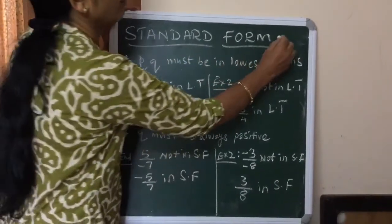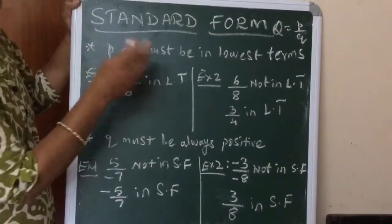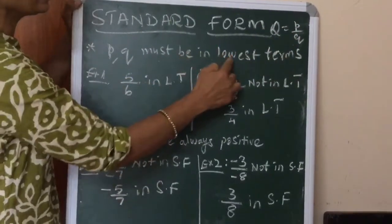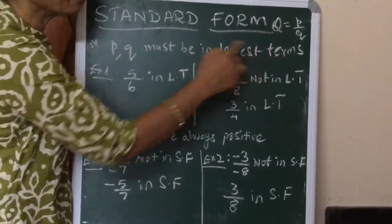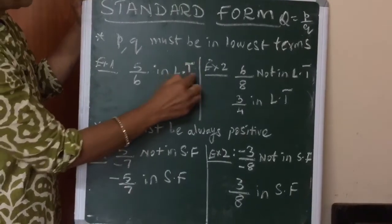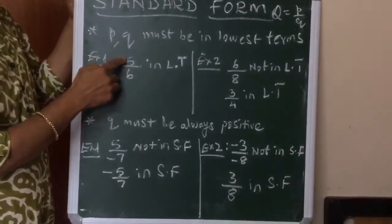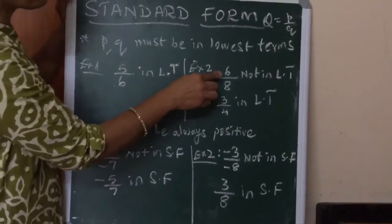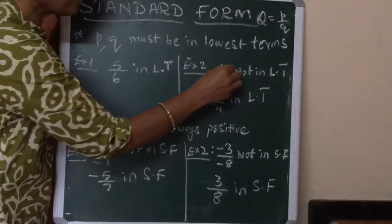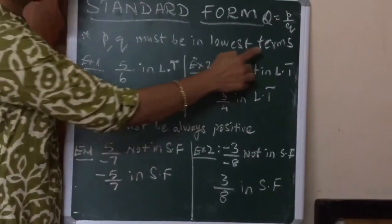Now let's look at the standard form of a rational number. Two conditions must be satisfied. Condition one: p and q must be in lowest terms, meaning their common factor should be 1. For example, 5/6 is in lowest terms because 5 and 6 have no common factor other than 1. But 6/8 is not in lowest terms — dividing both by 2 gives 3/4, which is in lowest terms.